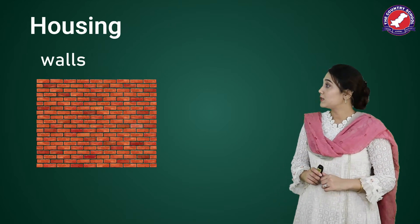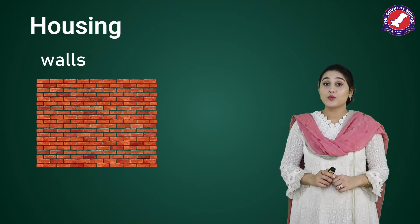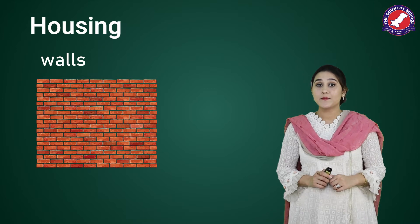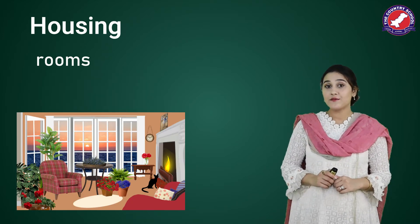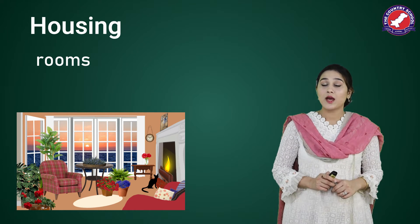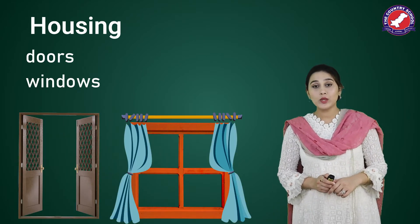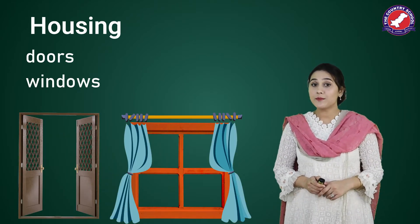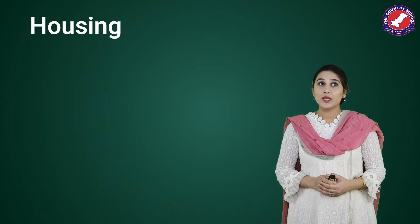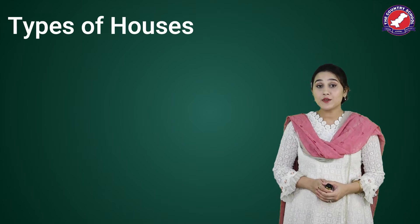These are its walls. The walls cover the sides. And what does a house have? It has rooms, and the rooms have doors and windows. These were the parts of a house. Now let's learn about the types of a house.